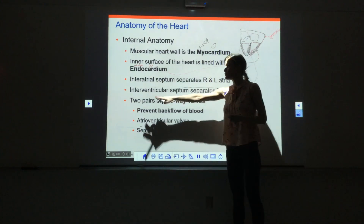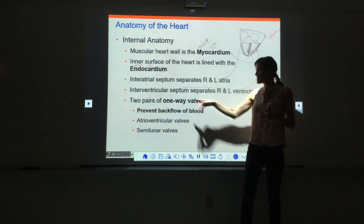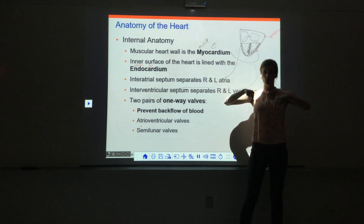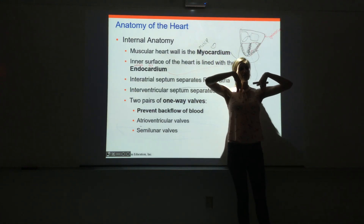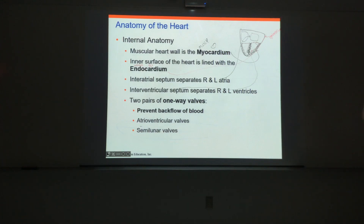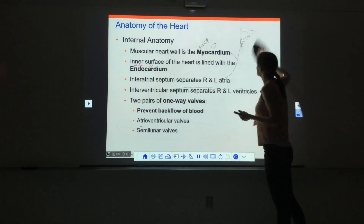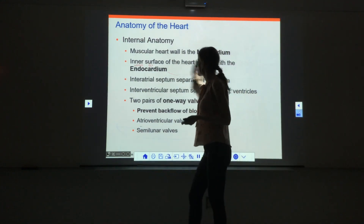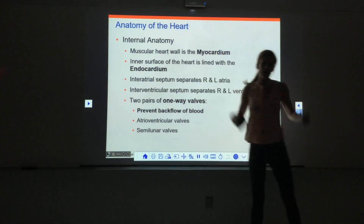We also have two pairs of one-way valves — four valves total. They control the flow of blood through the heart. We only want blood flowing forward, never backward, so the valves open to allow forward flow but shut if blood tries to go backward. One pair are the atrioventricular valves, located between each atrium and its corresponding ventricle. The other pair are the semilunar valves, at the base of the large arteries carrying blood away from the heart.